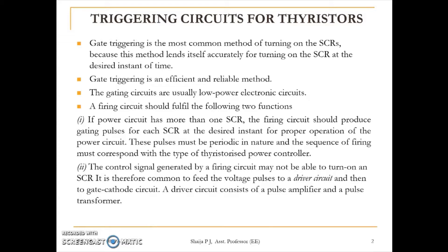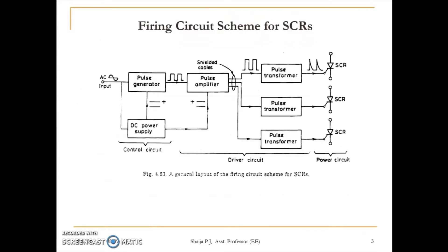Second, the control signal generated by the firing circuit may not be able to turn on the SCR directly, so voltage pulses are directed to a driver circuit. The driver circuit normally consists of a pulse amplifier and a pulse transformer. This diagram shows a firing circuit scheme for an SCR: the pulse generator, pulse amplifier, pulse transformer, and SCR.